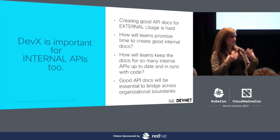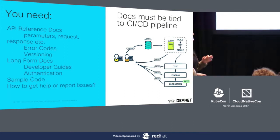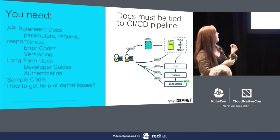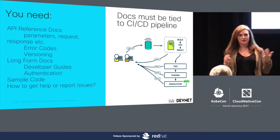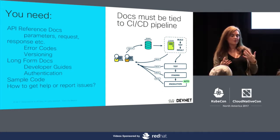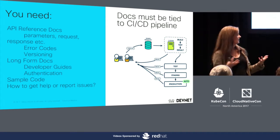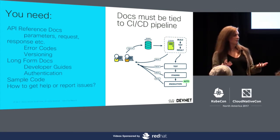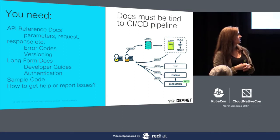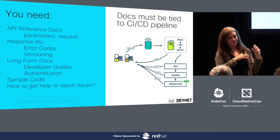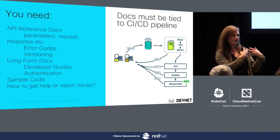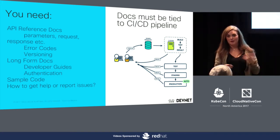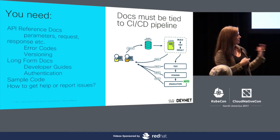Some of the things you need to start thinking about — and things we tackled in this project. You absolutely need API reference docs — that's the first and easiest one. You also need long-form documentation like authentication guides and getting started info, error codes, versioning, and some code samples. All the same things you'd need publishing an API externally. And what's really key when you think about microservices and internal teams working in a rapid DevOps fashion is that all of that needs to be tied into your CI/CD pipeline. That's the piece I want to talk about today.